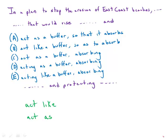First of all, we have the verbs in the first part of the sentence: 'would rise' — six feet above the water line — and then we need something parallel to 'rise.' So 'would rise and act' is correct. 'Would rise and acting' is not correctly parallel.